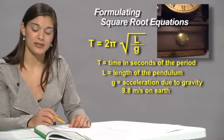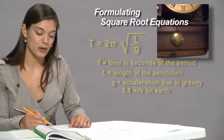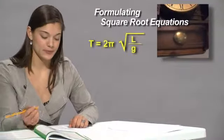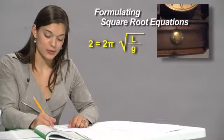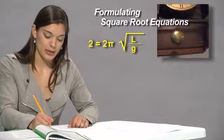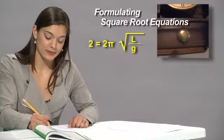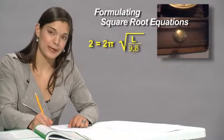If we're trying to find the length, that means that we need to solve for L. We know the other variables. T is 2 here, and that equals 2 pi times L, which we're trying to find, divided by 9.8, the gravity.